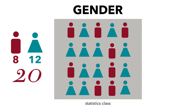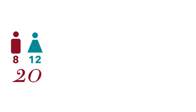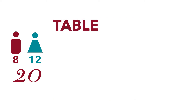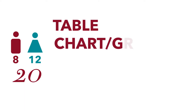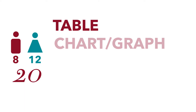What we're going to learn in this lesson is how to effectively display that information so that people can get information from it. We're going to do this in two ways — we're going to learn how to create a table and how to create a chart or a graph. So let's start with the table.